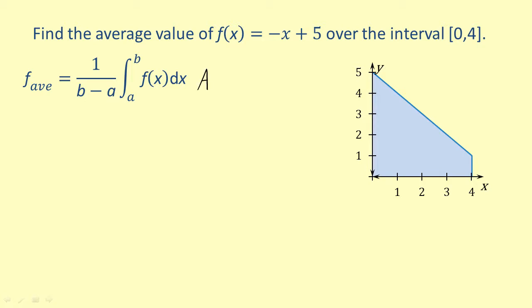The area of a trapezoid is 1 half times the height times the sum of the bases. So the integral of the quantity negative x plus 5 dx from 0 to 4 is equal to 1 half times h times the quantity a plus b.